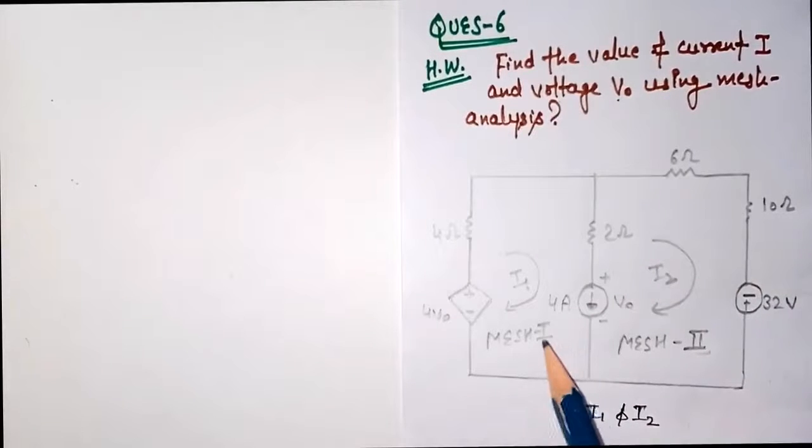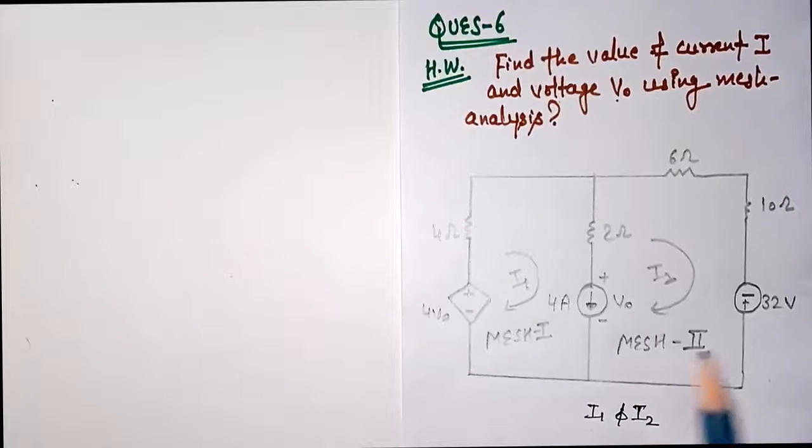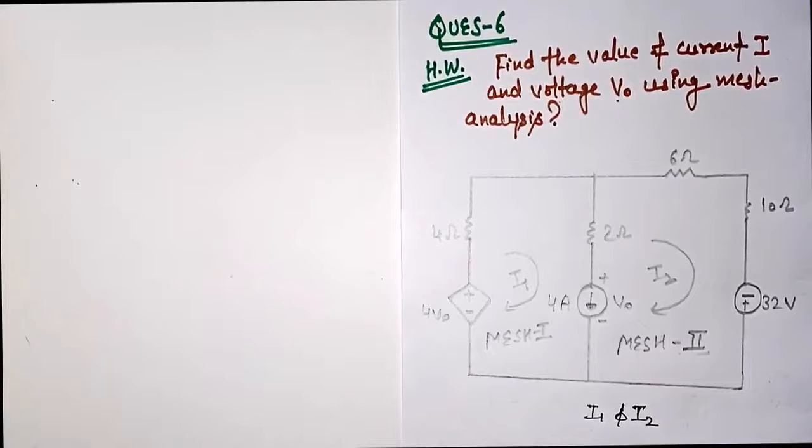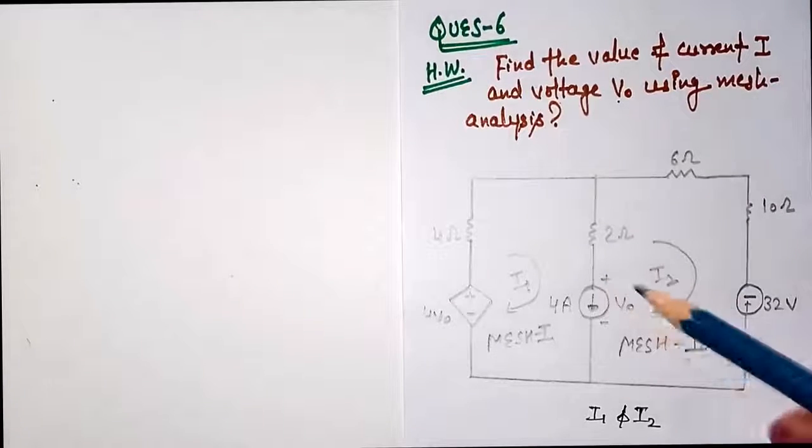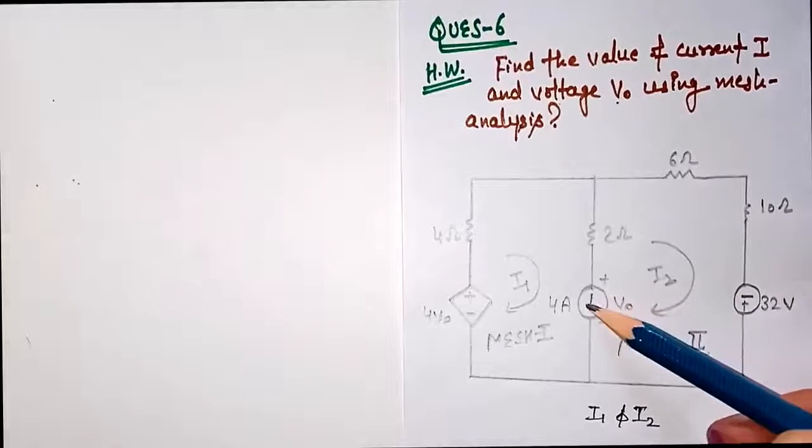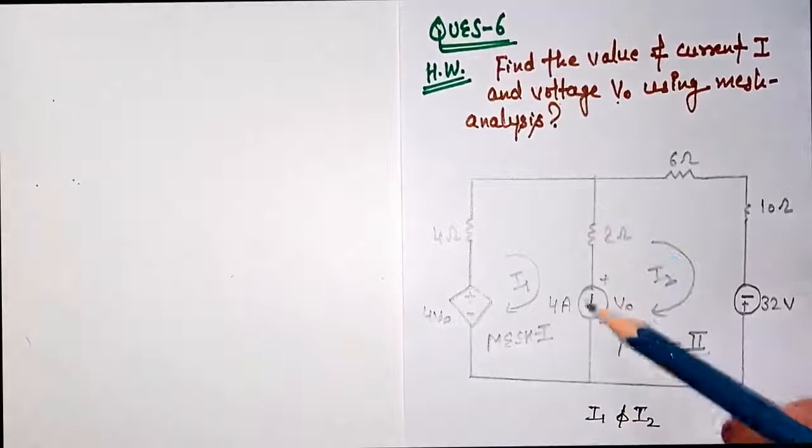Apply KVL equation on mesh one and then apply KVL equation on mesh two. Then look at the circuit very carefully. In this branch you can see that 4 ampere current is shown in downward direction.